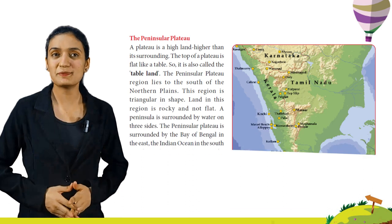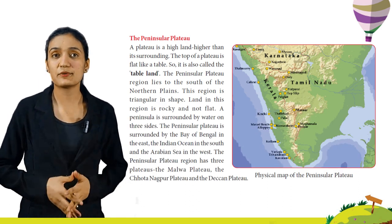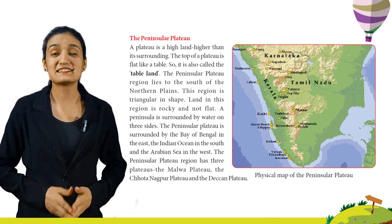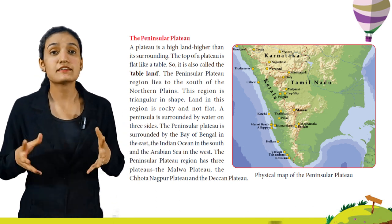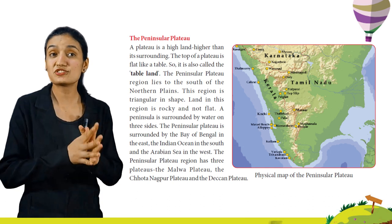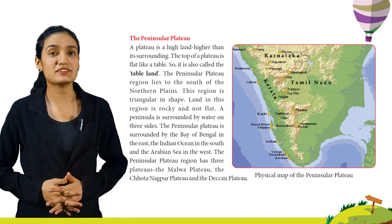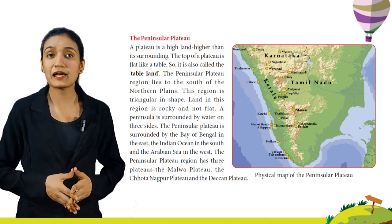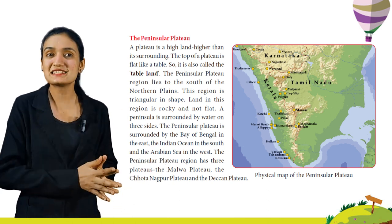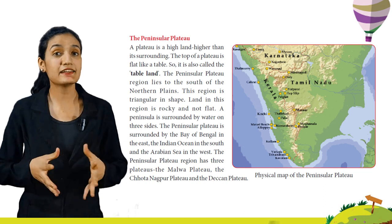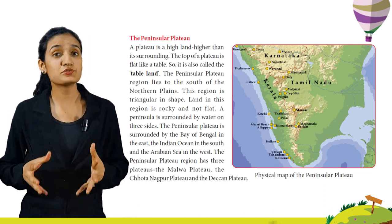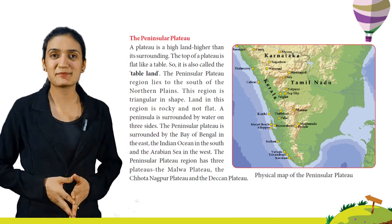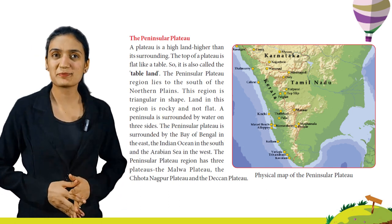A plateau is a high land higher than its surroundings. The top of a plateau is flat like a table, so it is called the table land. The Peninsular Plateau region lies to the south of the Northern Plains. This region is triangular in shape and the land is rocky and not flat. A peninsula is surrounded by water on three sides. The Peninsular Plateau is surrounded by the Bay of Bengal in the east, the Indian Ocean in the south and the Arabian Sea in the west. The Peninsular Plateau region has three plateaus: the Malwa Plateau, the Chota Nagpur Plateau and the Deccan Plateau. Here you can see the physical map of the Peninsular Plateau.